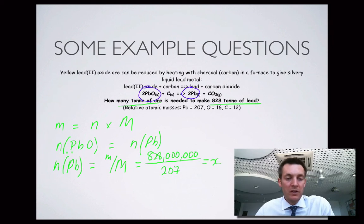Then this number of moles of lead is the same as the number of moles of lead oxide. So, I can put whatever number this is into here. This is the number of moles of my ore. I'm going to multiply that by the molar mass of my ore.